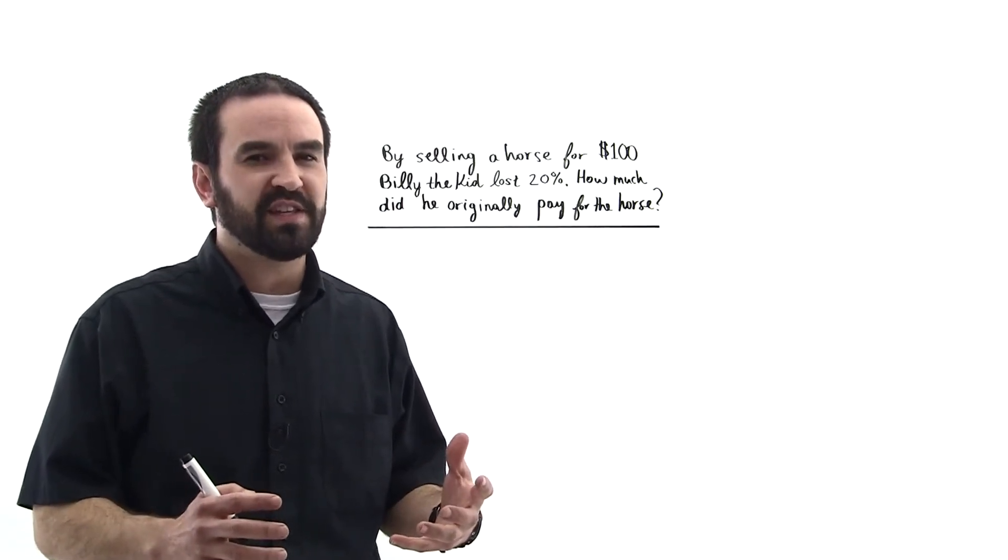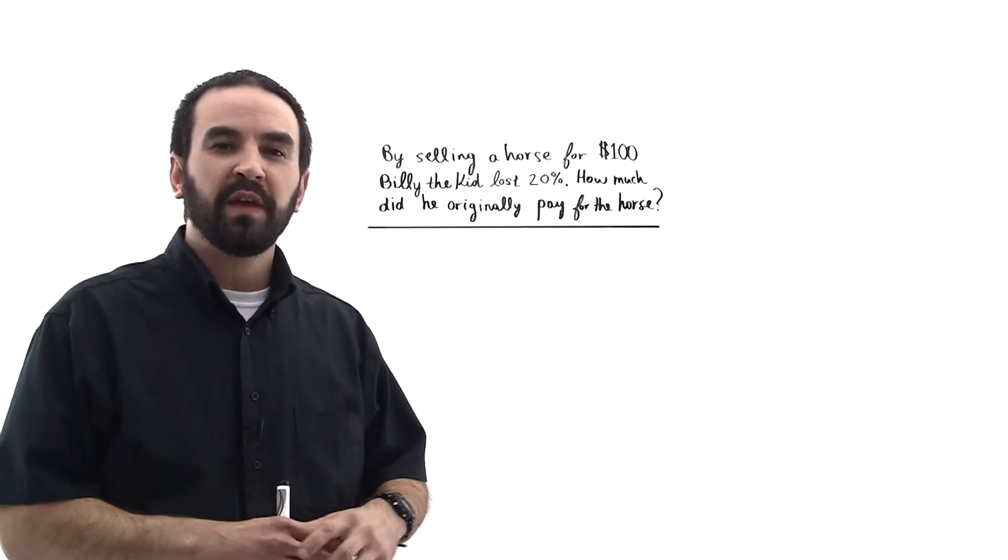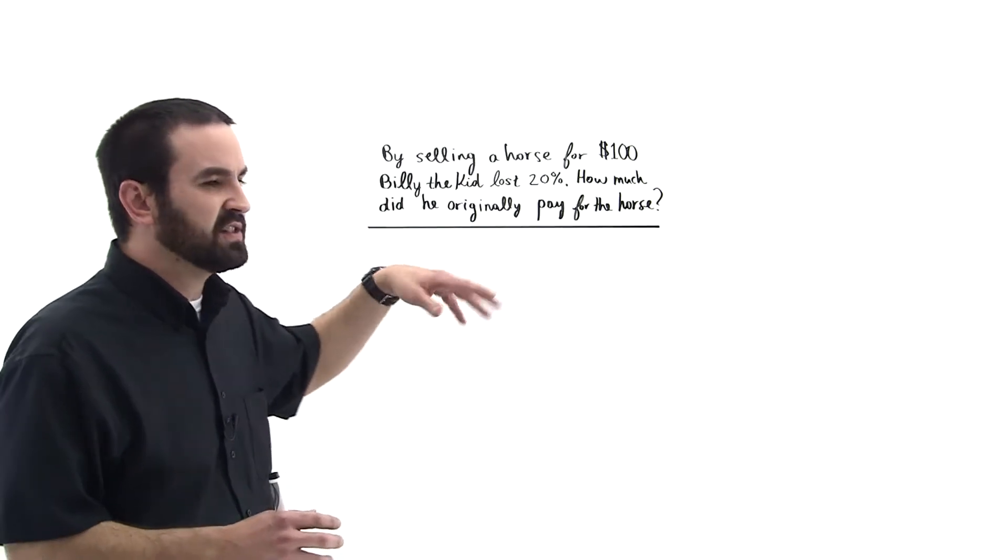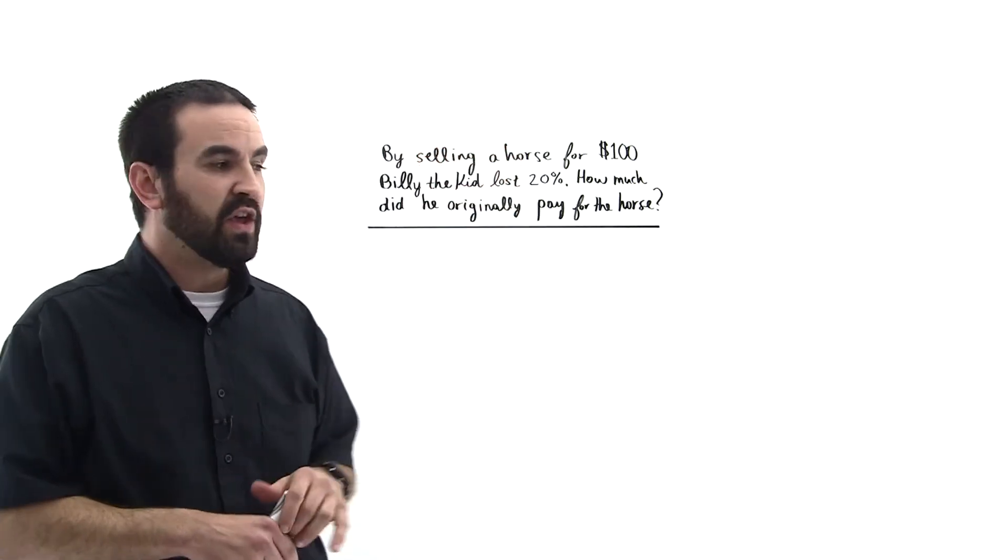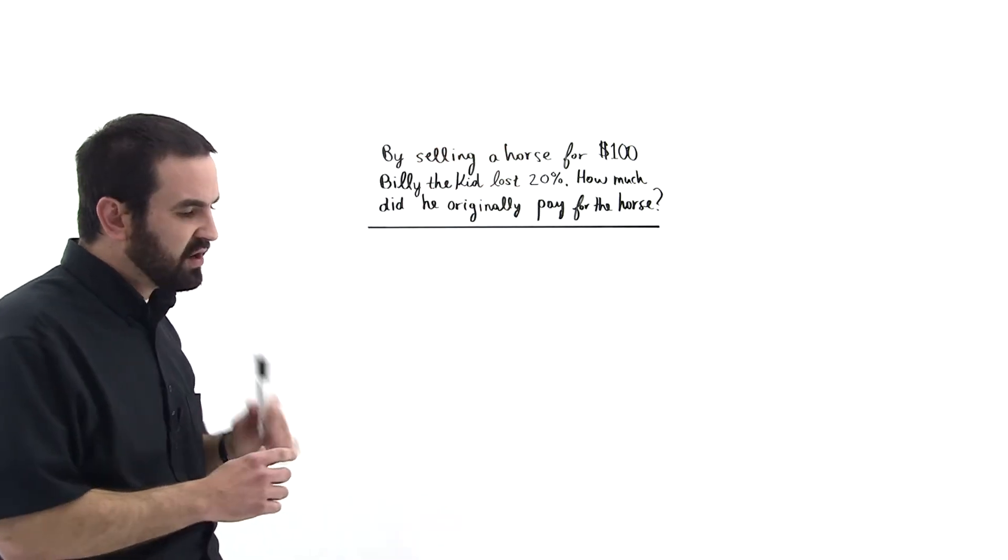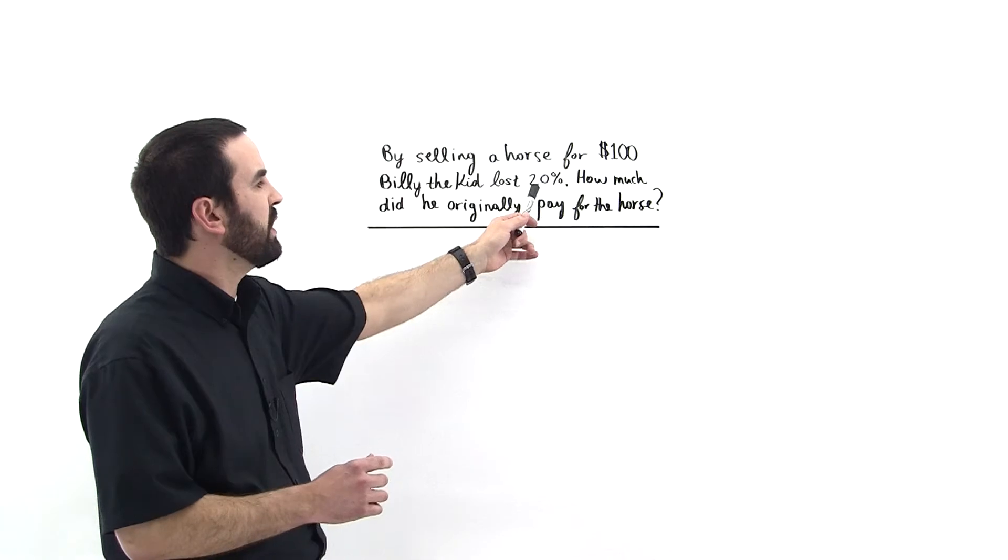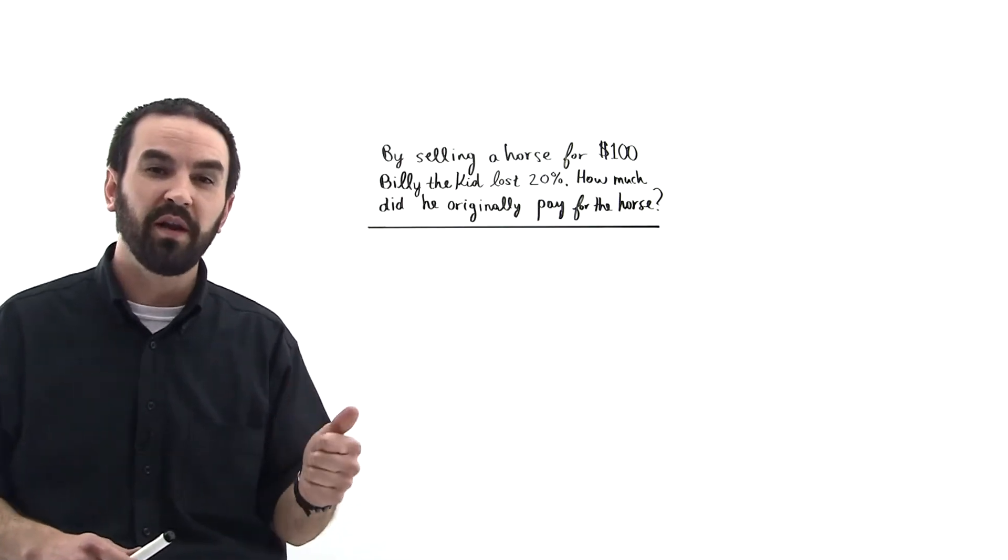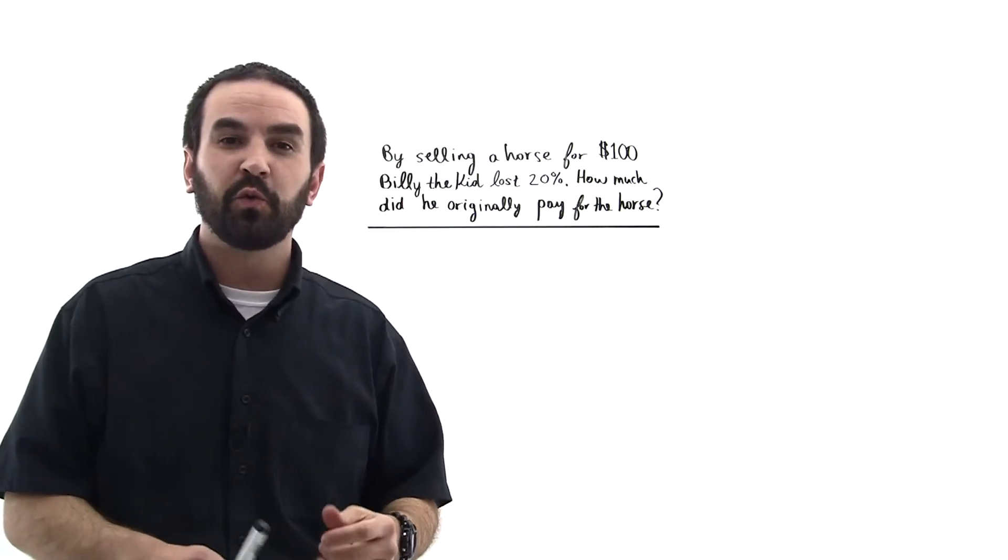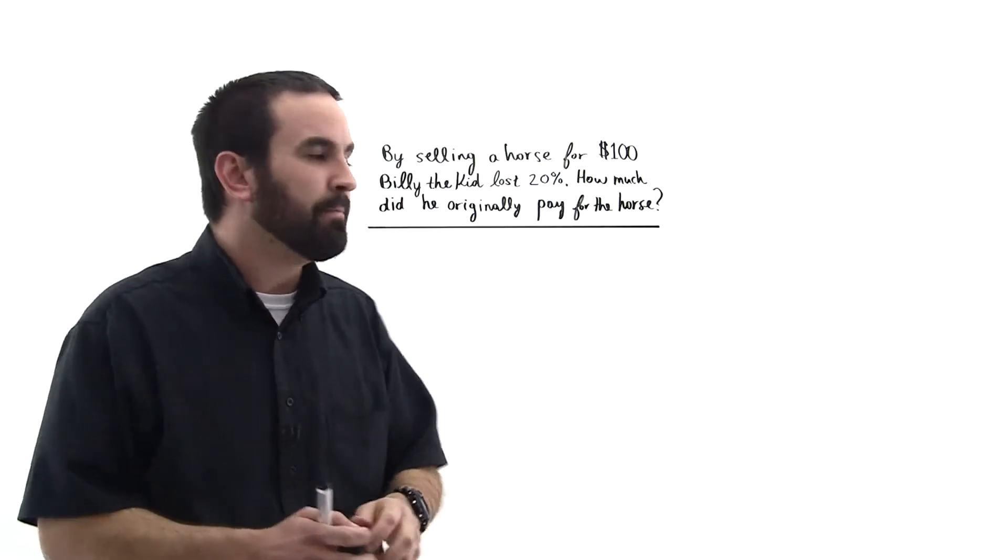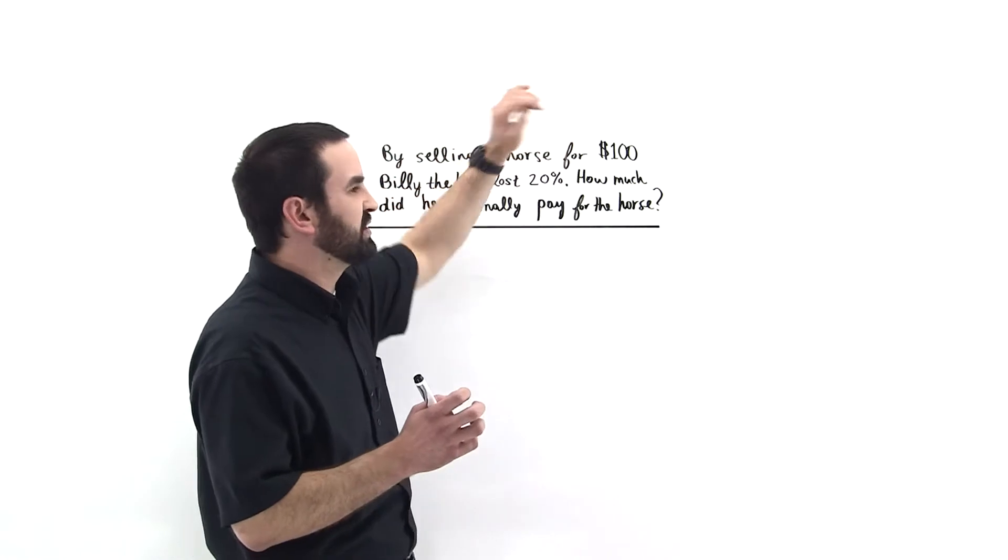He lost 20% on the sale. So if he sold it for $100, that means that he must have originally paid some amount greater than that, right? So because it was a loss, take this 20% and subtract 1 minus that 20%. So 1 minus 0.2 is 0.8. So we're going to do something with 0.8 and we're going to do something with this 100.